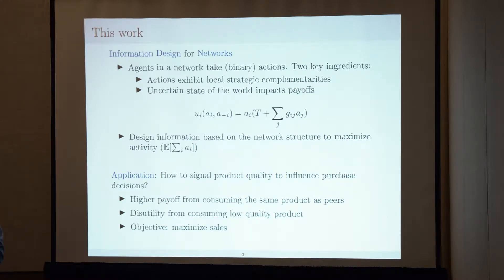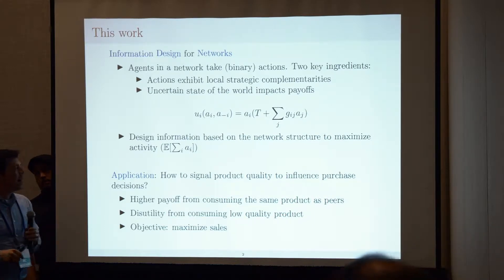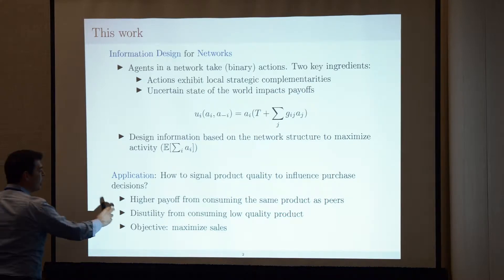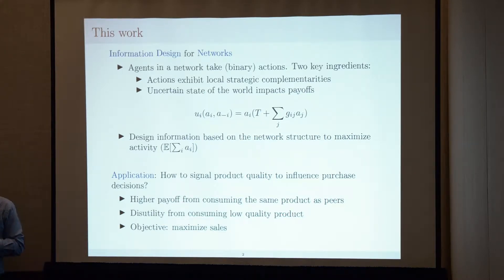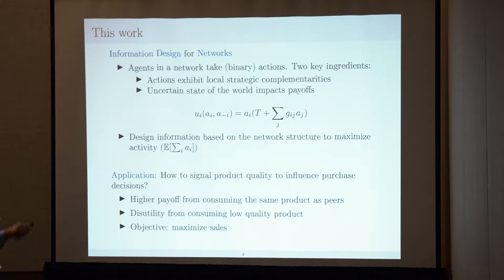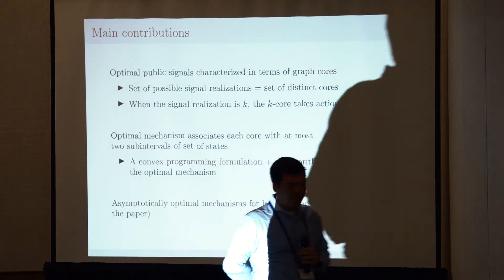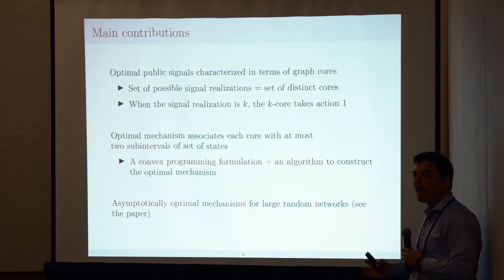The talk is set in an abstract setting, but for an application, consider the following: a seller offers a product with local network externalities — I have higher payoff from using this product if my friends in the underlying network use the same product. The quality is a priori unknown, and one can send informative signals about quality. How to do so in a way that maximizes sales is the type of question this model answers.